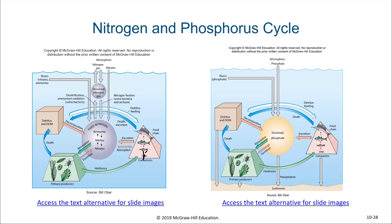Primary producers primarily absorb nitrogen in the forms of nitrates, nitrites, and ammonia — they are a sink for nitrogen, although some is released through excretion. Consumers are mostly contributors of nitrogen through excretion, although they may absorb some themselves. Detritus and dissolved organic matter, as they decompose, also contribute to the dissolved nitrogen. The phosphate cycle is similar: most phosphate comes from lithogenous or atmospheric sources — either through rivers or particulate matter from the atmosphere. Dissolved phosphate is essential for primary producers and is also released through excretion and decomposition.